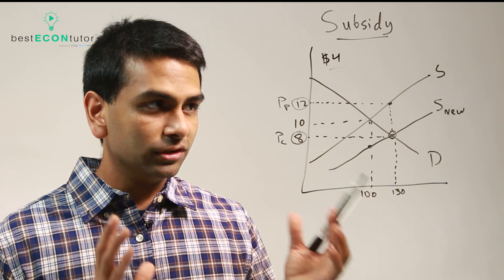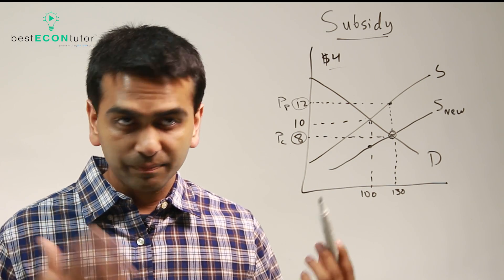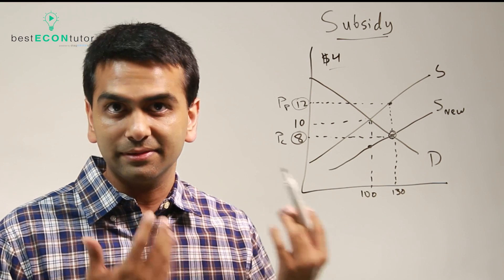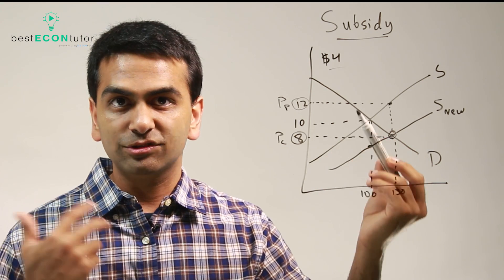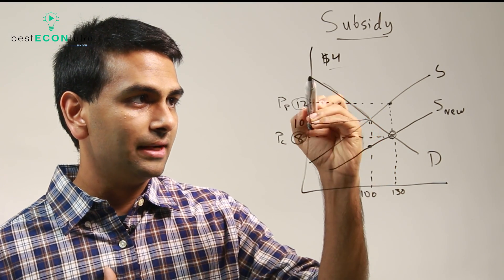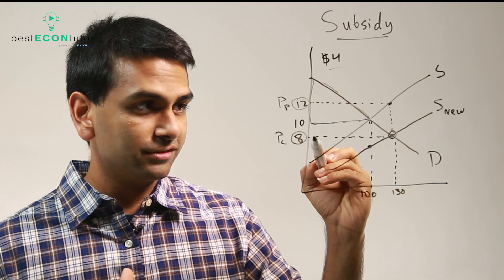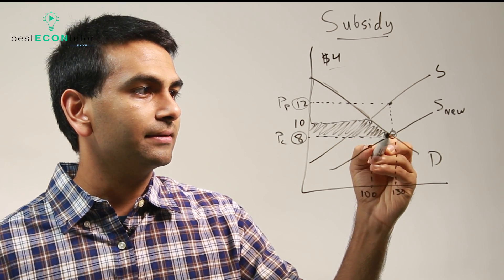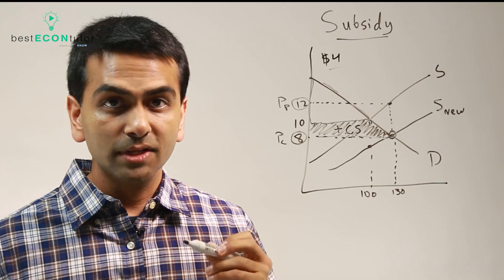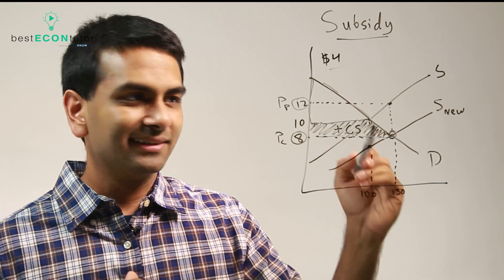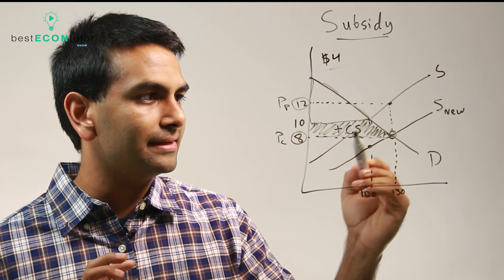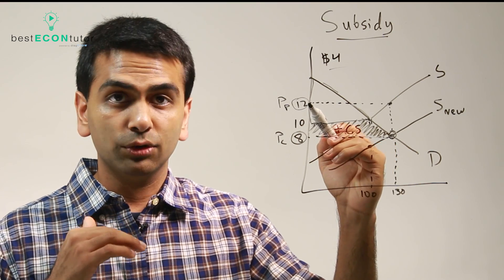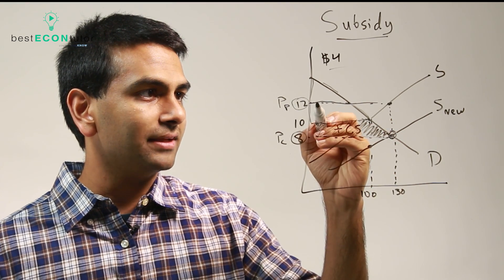To look at what happens with CS and PS, they're going to overlap a little bit, so it's easier to focus on the change in CS and change in PS. The old CS used to be everything above $10 underneath the demand. But now since they're only paying $8, it's everything above $8, so it increases by this much — this is the increase in consumer surplus. For the increase in producer surplus: the old producer surplus used to be everything below $10 above the original supply curve, and now it's everything below $12 because they're getting more money. So that's going to increase by this amount.